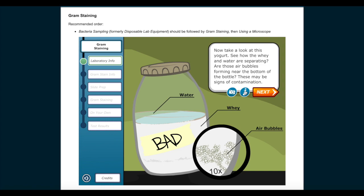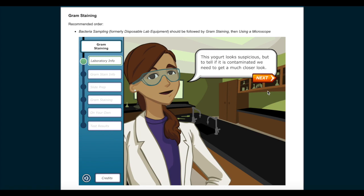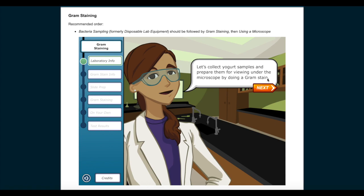Why are air bubbles a sign of contamination? When bacteria grow, they produce gases. Air holes appearing at the bottom of a yogurt container indicate the presence of an undesirable bacteria. This yogurt looks suspicious, but to tell if it is contaminated, we need to get a much closer look.